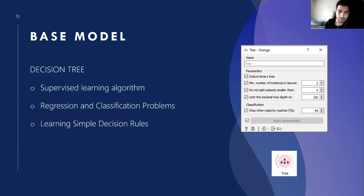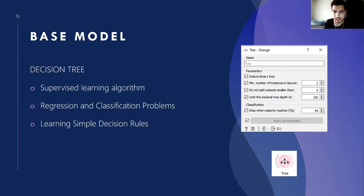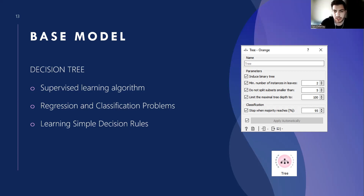I will start preprocessing by introducing our base model's compatibility with our model. We performed our preprocessing steps using the decision tree. The goal of using the decision tree is to create a training model that can predict the class or value of the target variable by learning simple decision rules — in other words, if-else conditions inferred from prior data. We did not interfere with the decision tree widget, leaving the settings as default.